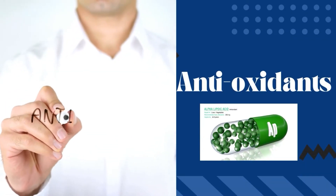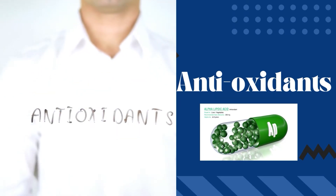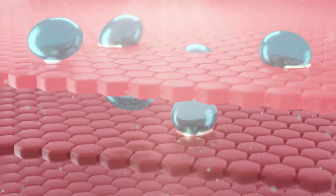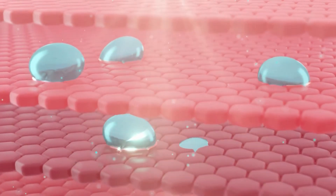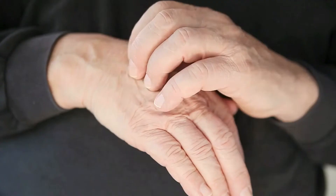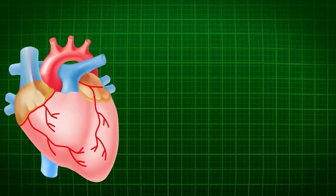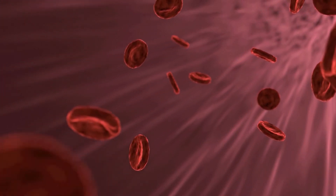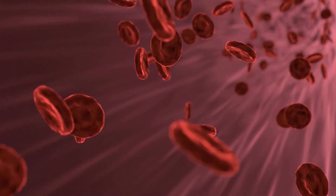Antioxidants are compounds produced in your body and found in foods. They help defend your cells from damage caused by potentially harmful molecules known as free radicals. When free radicals accumulate, they may cause a state known as oxidative stress, which may damage your DNA and other important structures in your cells. Sadly, chronic oxidative stress can increase your risk of skin aging and chronic diseases such as heart disease and cancers. Fortunately, eating a diet rich in antioxidants can help increase your blood antioxidant levels to fight oxidative stress and reduce the risk of these diseases.